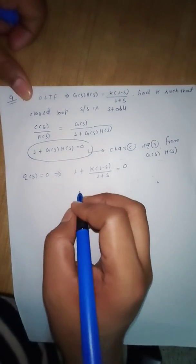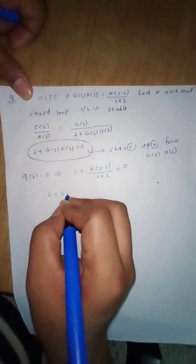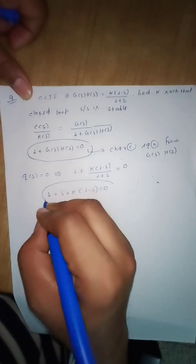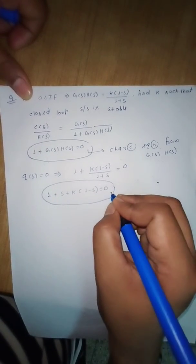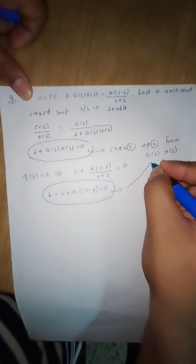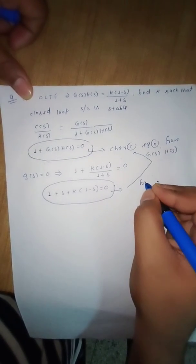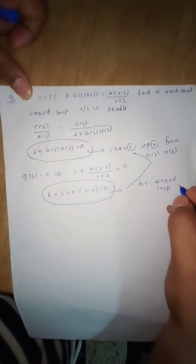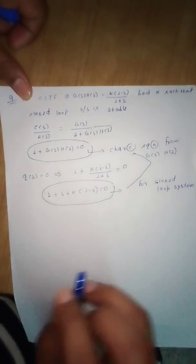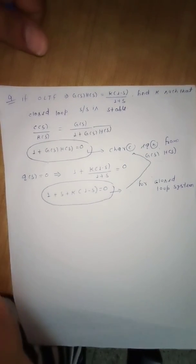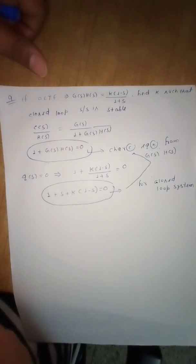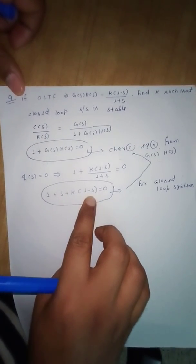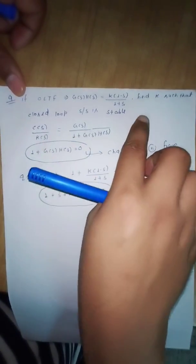Let us simplify. We have (1 + s) + k(1 - s) equal to 0. This is our characteristic equation for the closed loop system. Now we can define the Routh array, writing a table according to the coefficients of the characteristic equation, and then calculate the value of k such that the closed loop system is stable.